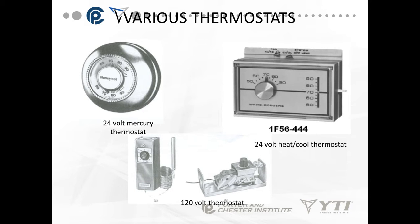These are examples of various thermostats you might see. The top left-hand corner is strictly for heating and air conditioning, as is the top right. The bottom two pictures are the remote bulbs, and you're going to see them most often in refrigeration — they're 120 volt line voltage.